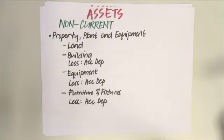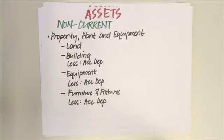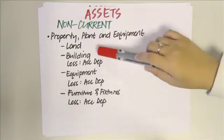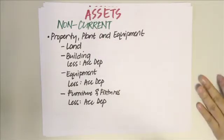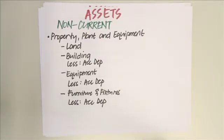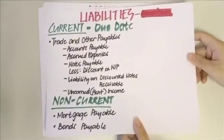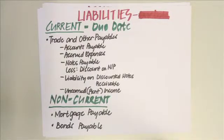For non-current assets in basic accounting, you only have property, plant and equipment. Under it you can have land, building less accumulated depreciation, and equipment less accumulated depreciation — remember to match them appropriately. Note that land does not have accumulated depreciation because land does not decrease in value, so there is no depreciation for land.